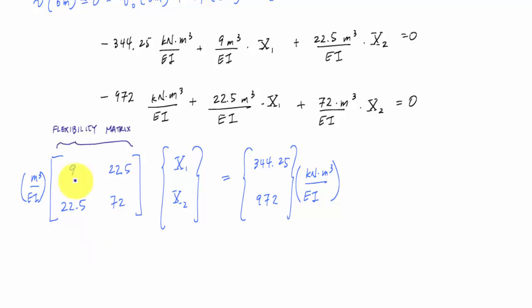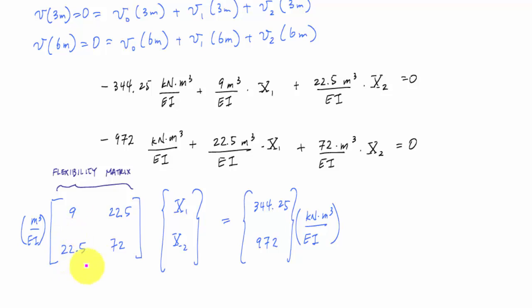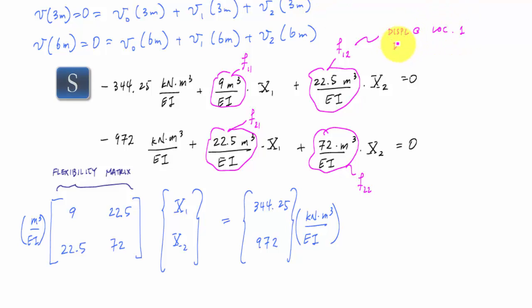So here's my matrix formulation and this symmetric matrix is my flexibility matrix. Each of these are my flexibility coefficients in this flexibility matrix. I could describe this as f11 or row 1 column 1, this f12 row 1 column 2, and here I could call this one f21 row 2 column 1 and f22 row 2 column 2. The way that this flexibility coefficient is described is the displacement at location 1 due to a unit load at location 2.